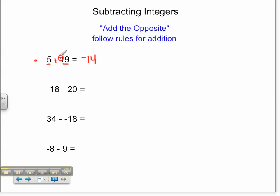Moving on, my next problem shows me that negative 18 minus 20 equals. I'm going to make my minus a plus by adding, and then I need to find the opposite of 20. The opposite of 20 is negative 20. My new addition problem is negative 18 plus negative 20.